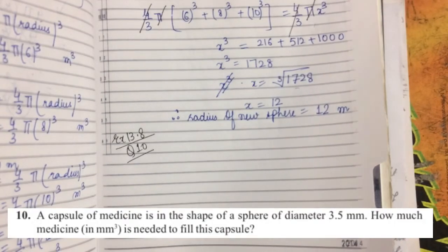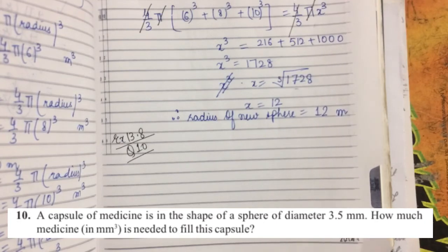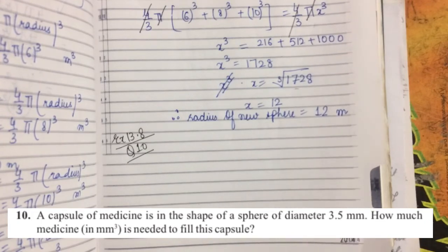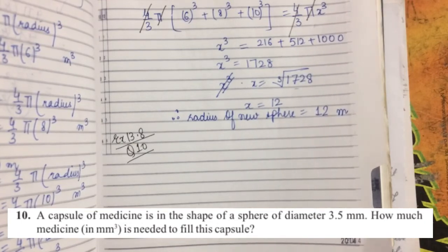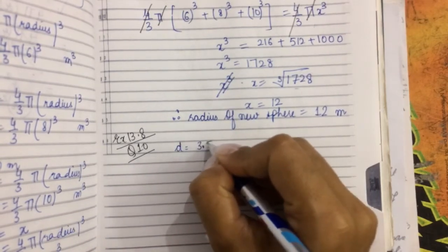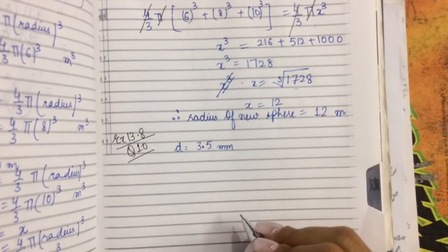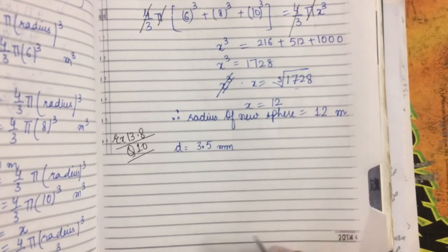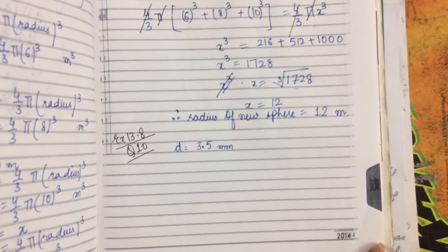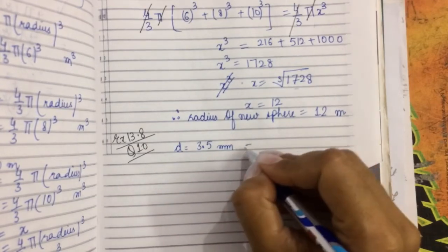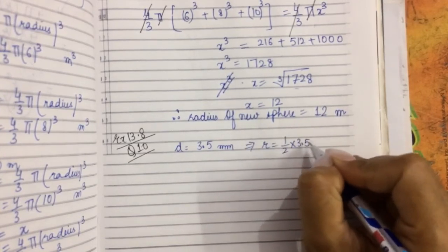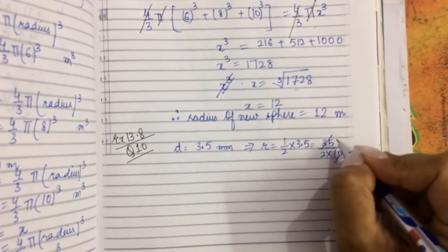Last question: a capsule of medicine is in the shape of a sphere of diameter 3.5 mm. How much medicine in mm³ is needed to fill this capsule? Since the answer is asked in cubic units, we find the volume. Diameter = 3.5 mm, so radius = 3.5/2 = 7/4 mm.